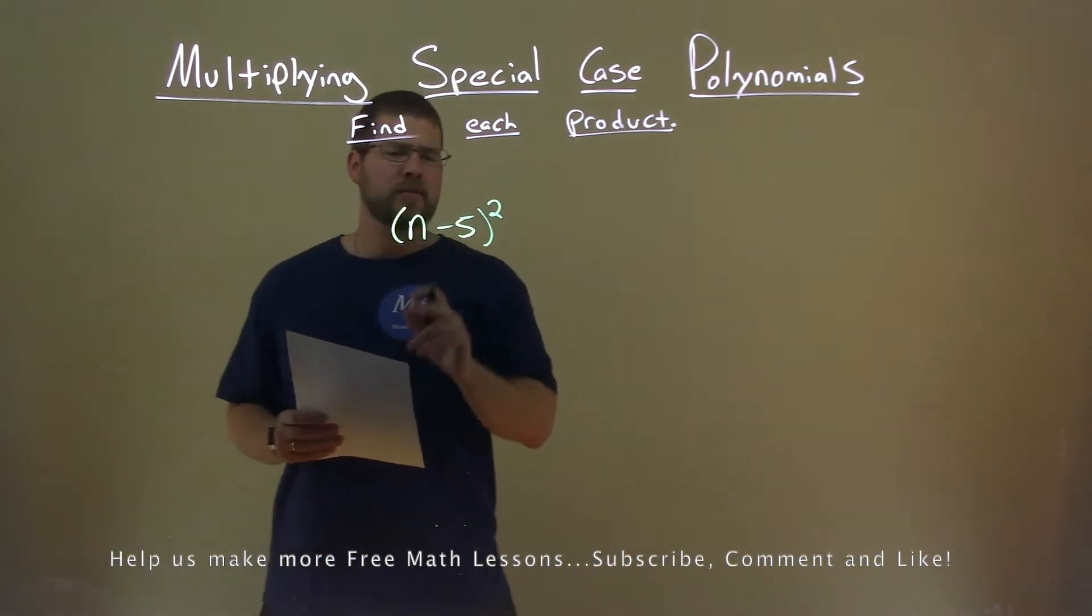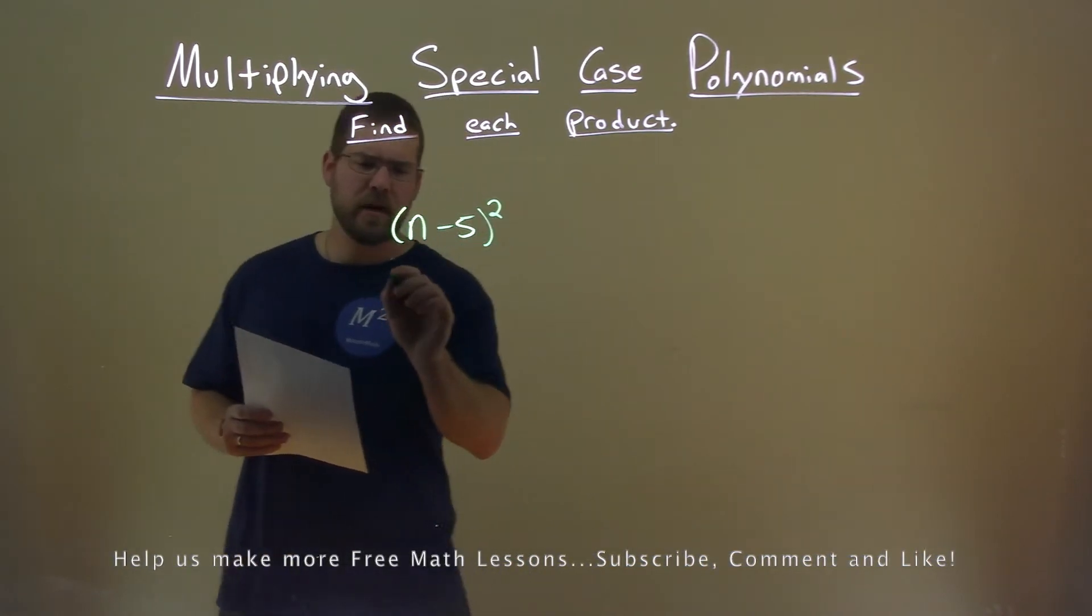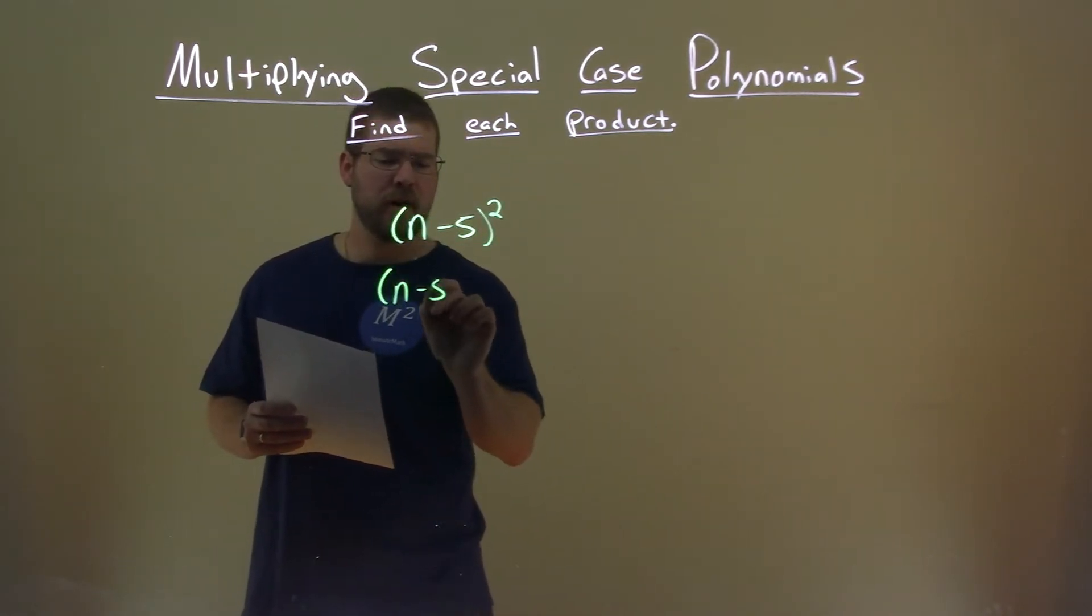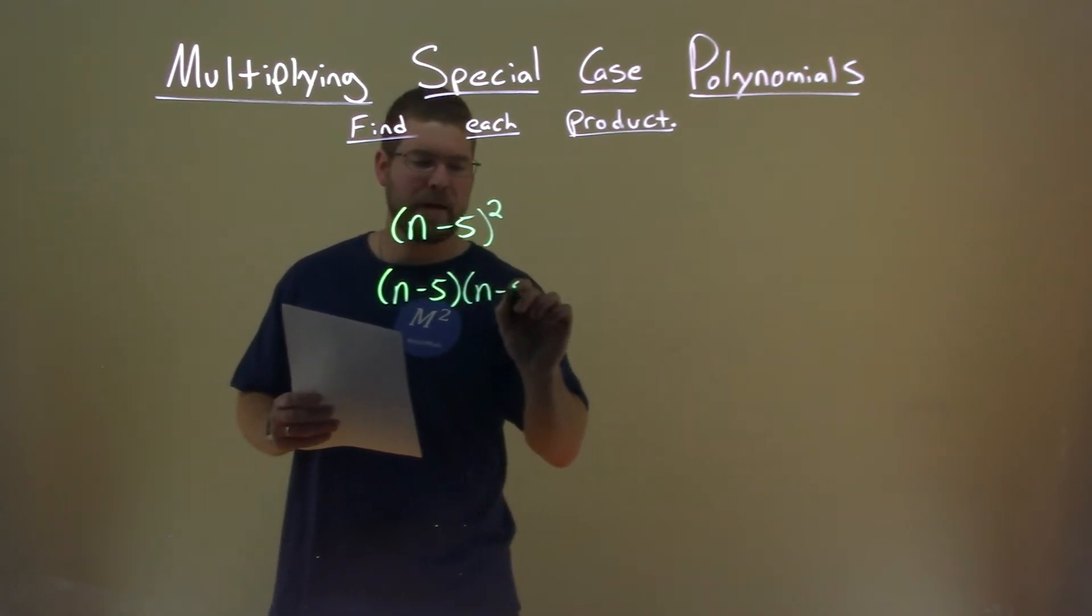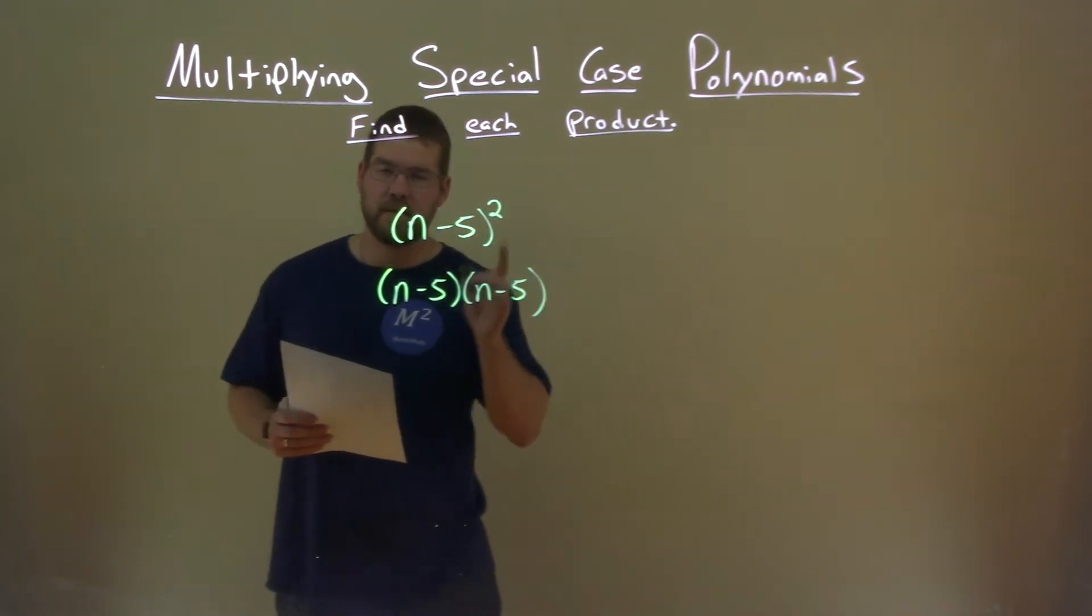Well, n minus 5, that's squared. That tells us it's the same thing as n minus 5 times n minus 5, hence the product.